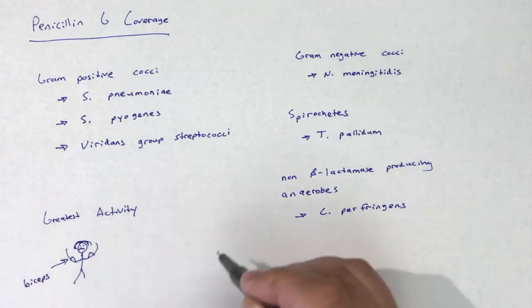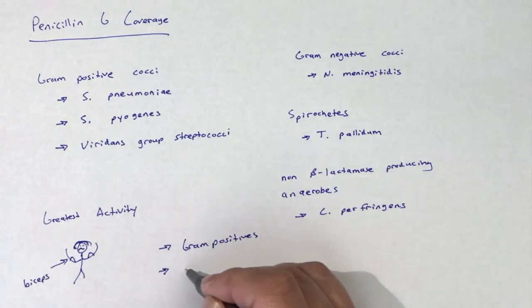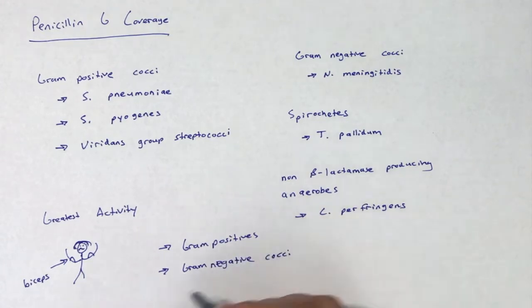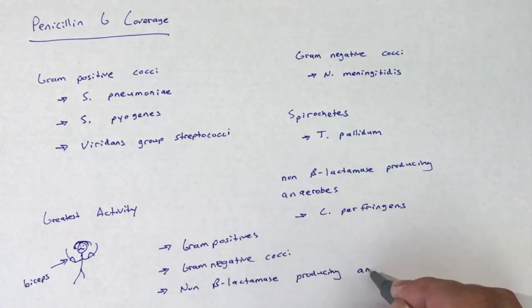Penicillin G has its greatest activity against gram-positive organisms, gram-negative cocci, and non-beta-lactamase-producing anaerobes.